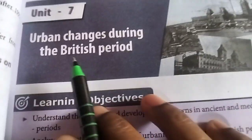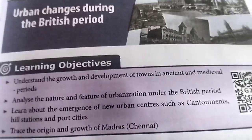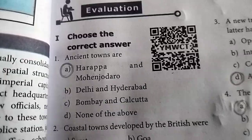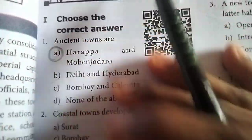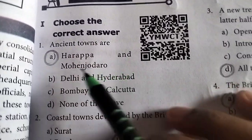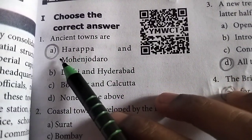Welcome students. In this video, Unit 7: Urban Changes During the British Period. This is the 8th Standard Social Science book. Choose the correct answer. First question answer is A.